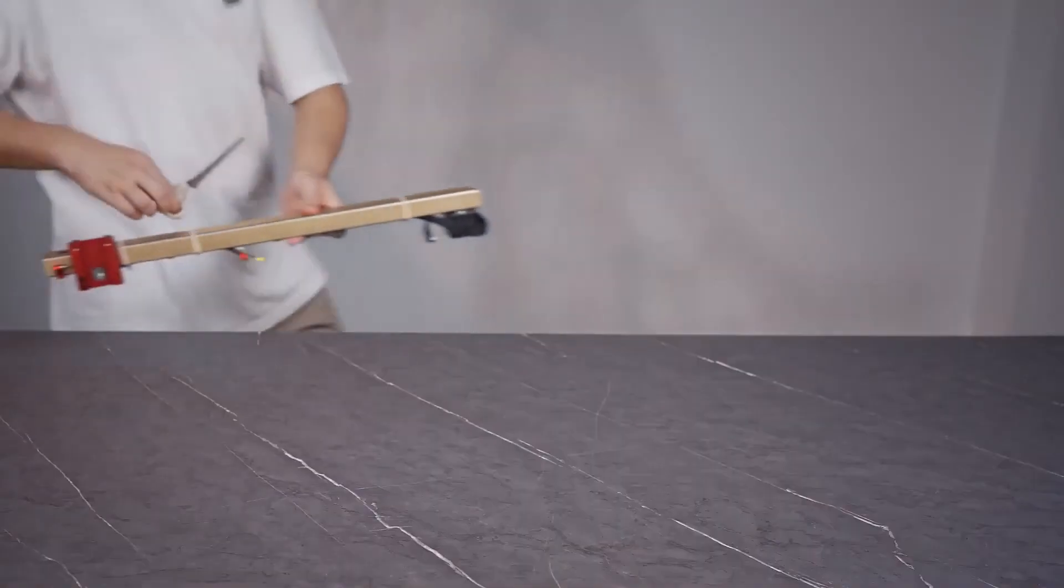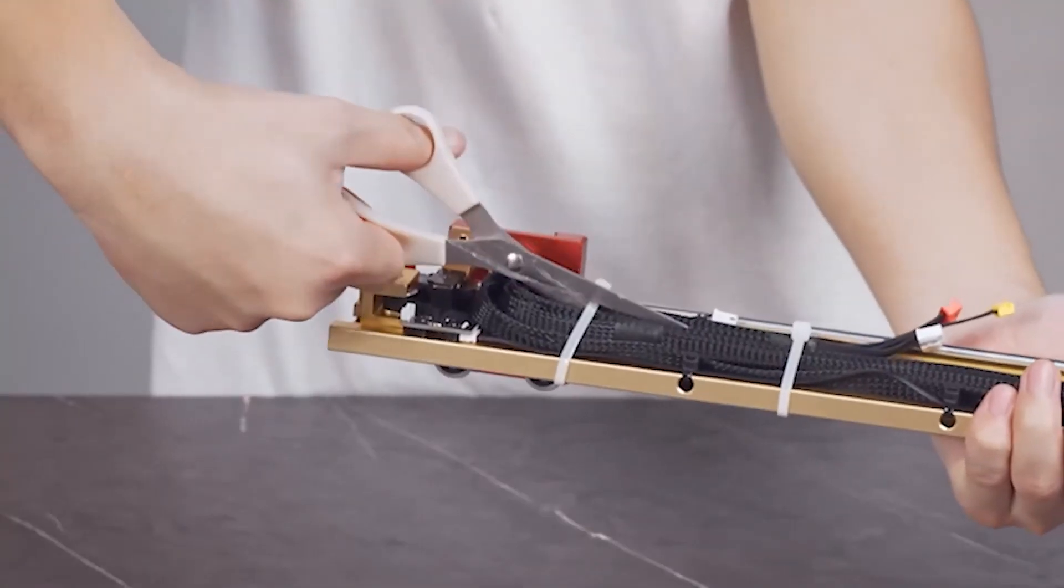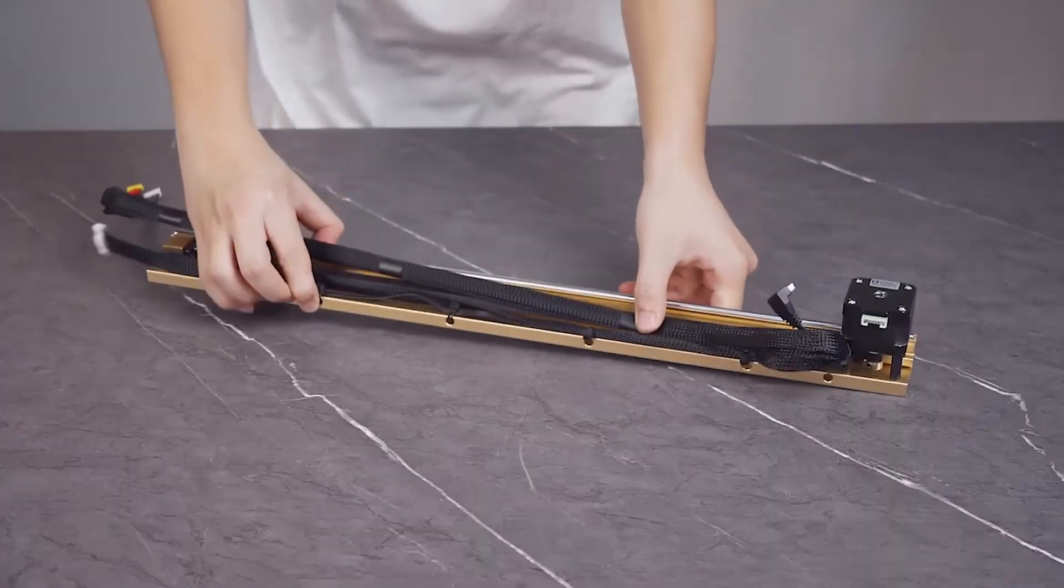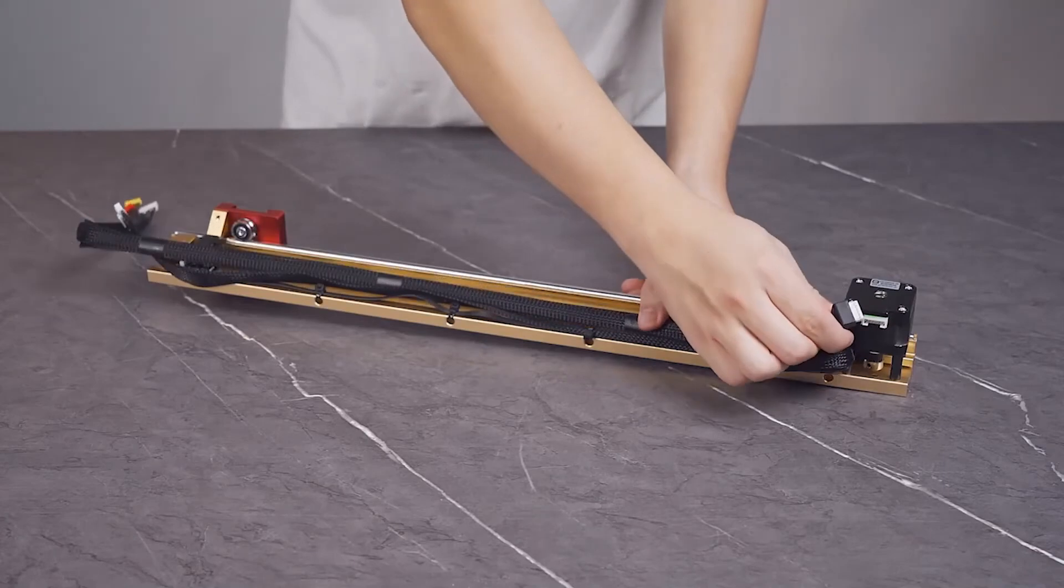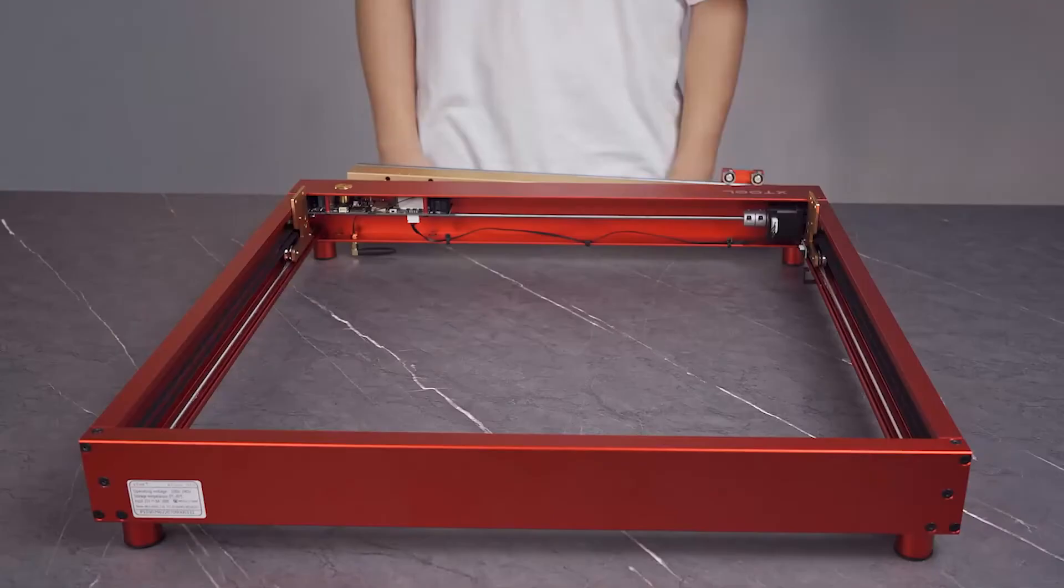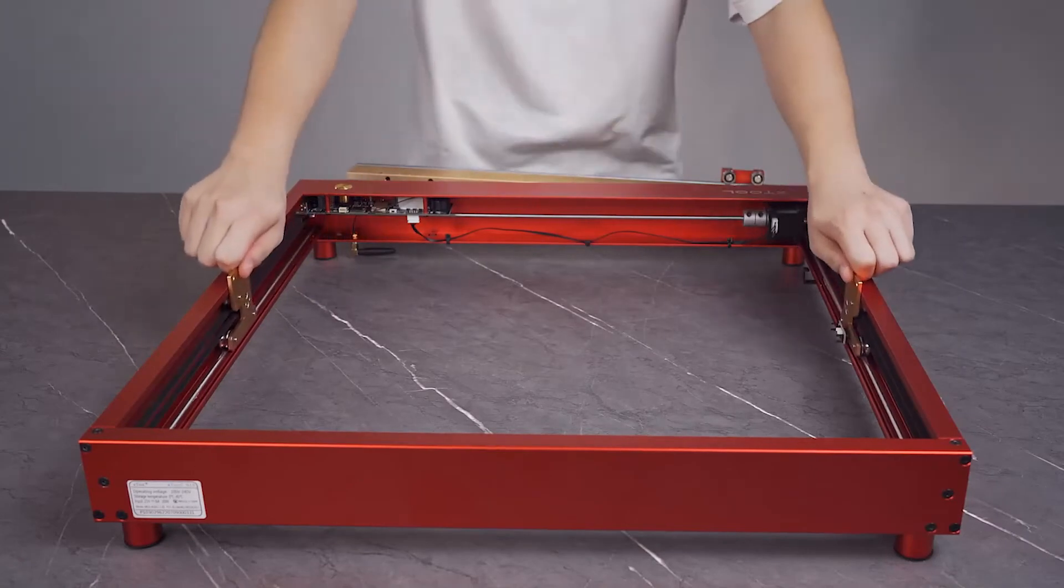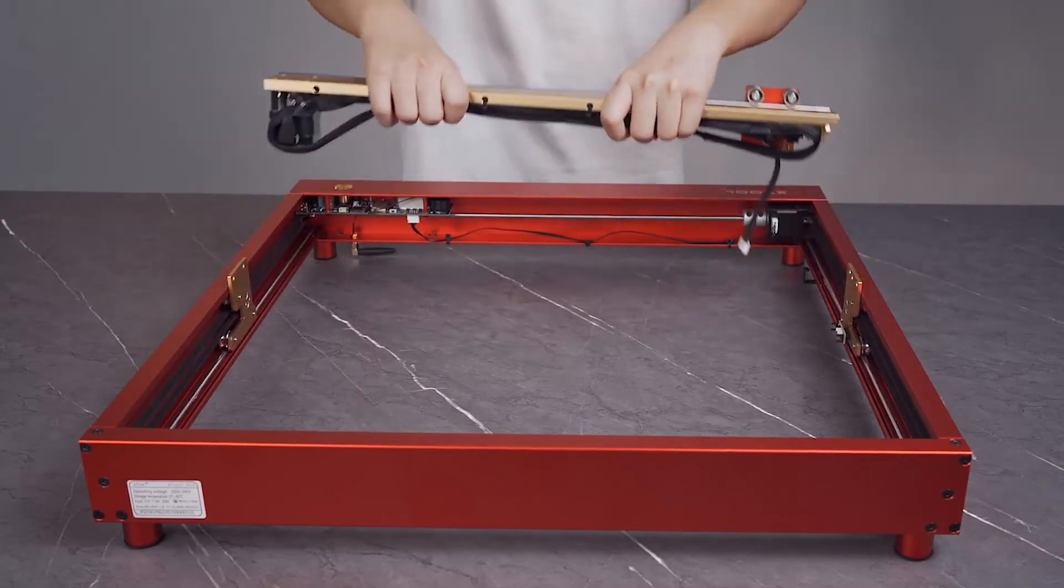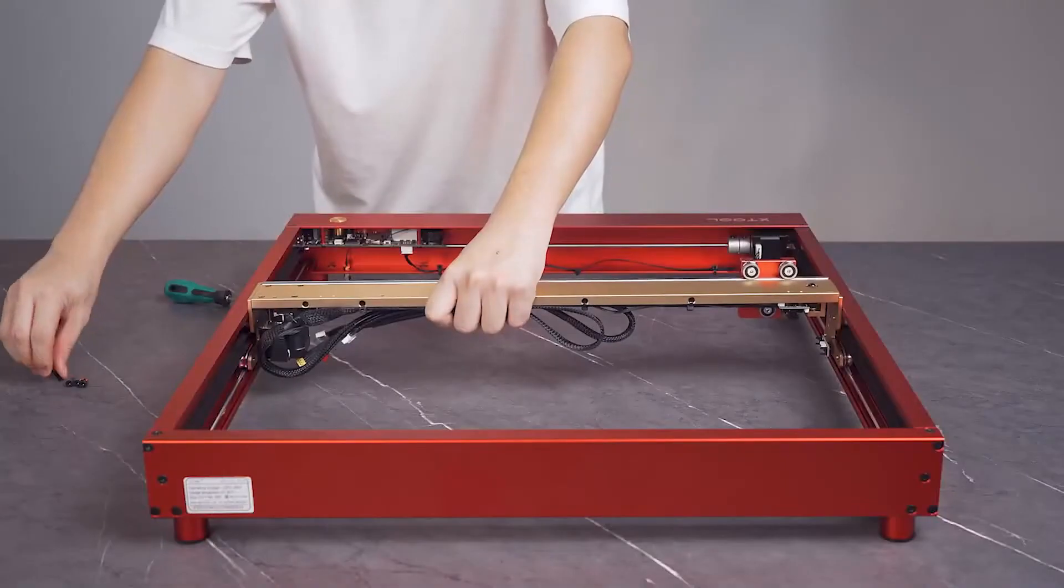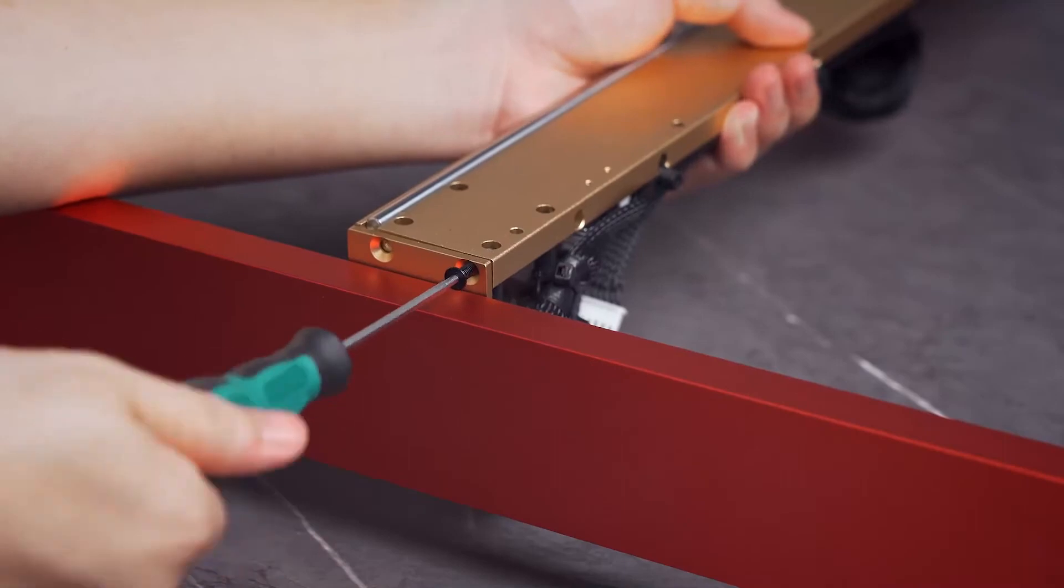Fit the middle plate. Cut off the white cable ties on the middle plate and reserve the black ones. Insert the connector of the motor cable into the port on the motor. Align the middle plate with the screw holes on the sliders and use screws to hold the middle plate and sliders together.